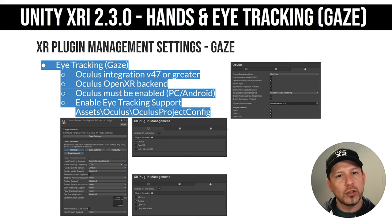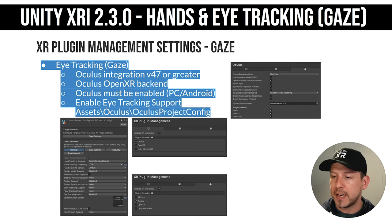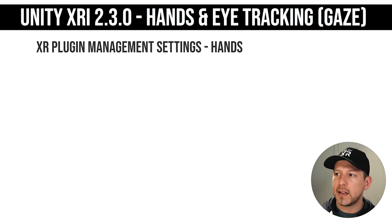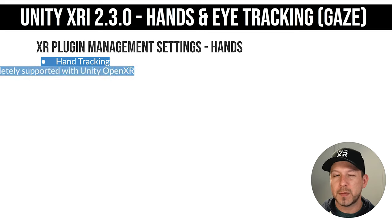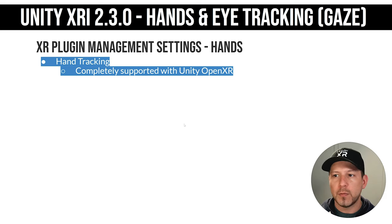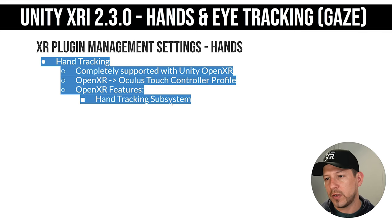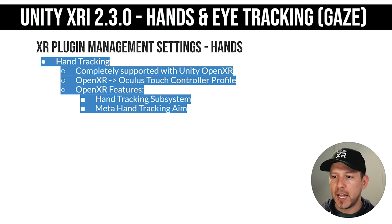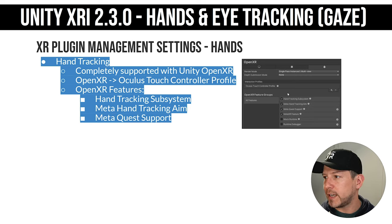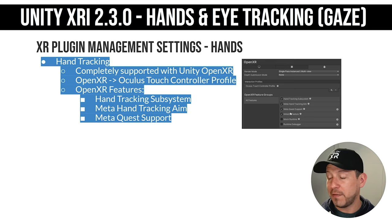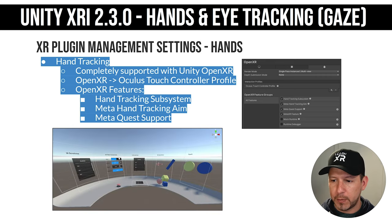I'll be including additional details and making this available on GitHub so you can check it out. For hands settings — many of you asked how to get hands working with the hand demo — this is completely supported with Unity OpenXR. Under OpenXR in Player Settings you can enable the Oculus Touch Controller profile, and features you need to enable include the hand tracking subsystem, Meta Hand Tracking Aim, and Meta Quest Support.